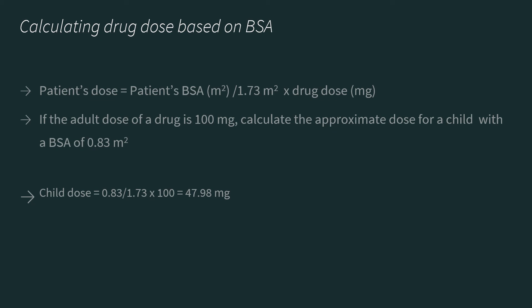Remember, if that dose is given in anything else besides milligrams — let's say grams or micrograms — make sure to convert that to milligrams. So now using that formula, we have child's dose equal to 0.83, which is the child's BSA, divided by 1.73, times 100 milligrams. And you have your child's dose.